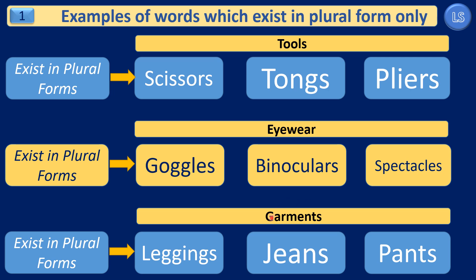In the next subcategory, we have garment items: leggings, jeans, and pants. We don't call them legging, jean, or pant, because these words always come in plural forms. From these examples, it is clearly understood that there are some words which always exist in plural form only.